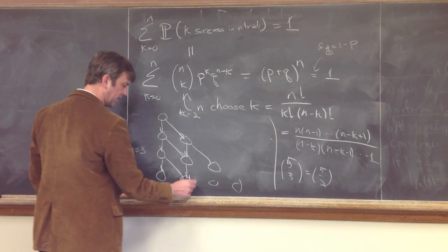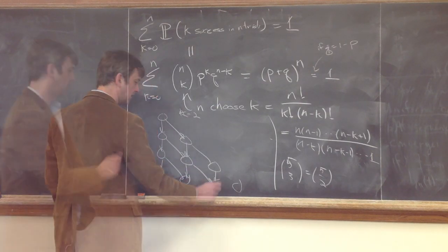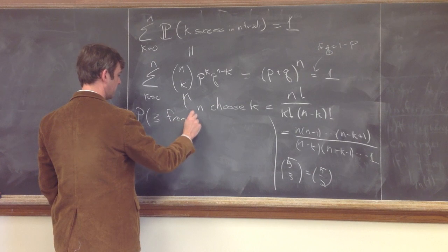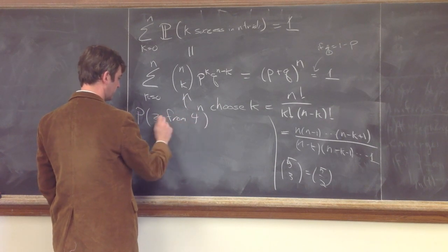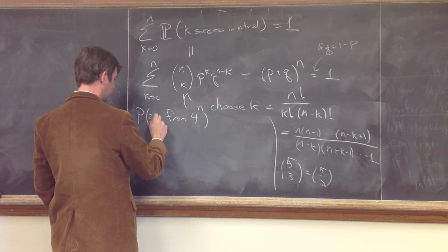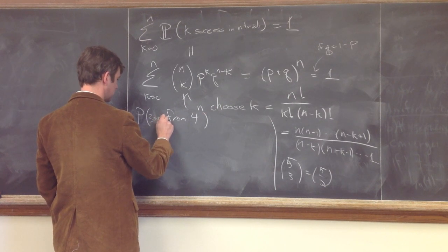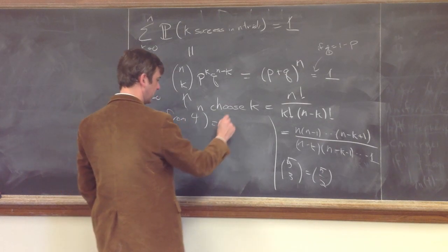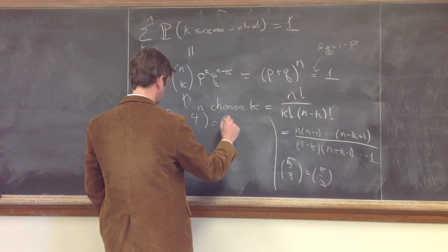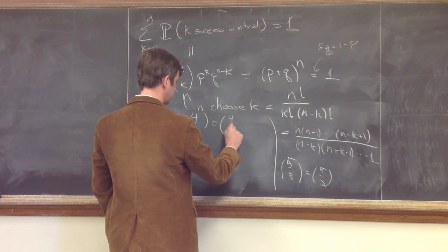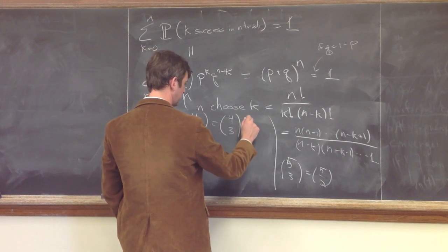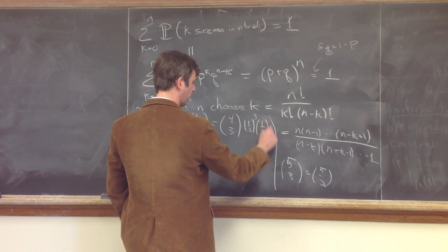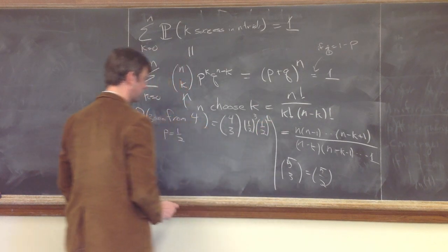And so that binomial coefficient is counting the probability of choosing 3 from 4, of having 3 successes, so that should be exactly, let's say that p equals 1 half, then that should be 4 choose 3 times 1 half cubed times 1 half to the 4 minus 3, which is 1, and that's the answer.